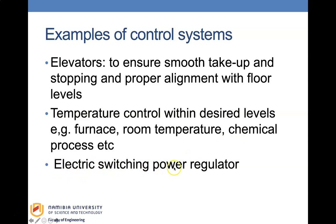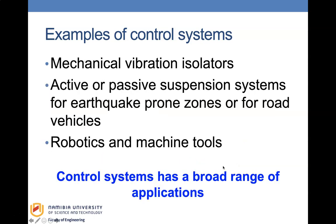Other examples include electric switching power regulators, mechanical vibration isolators, active or passive suspension systems used in earthquake-prone zones or road vehicles, and robotics and machine tools. Control systems have a broad range of applications in engineering, the medical field, biological systems, and even economics — control systems are literally everywhere.